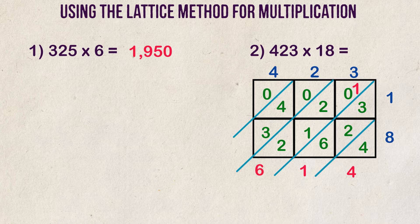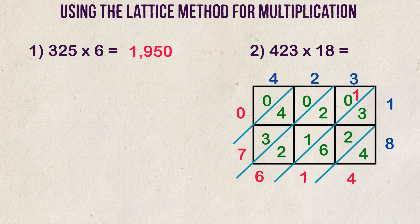Moving on, we have 3 plus 4 equals 7. And 0 is 0. We look at the numbers from left to right. We can ignore that 0 as our answer is 7,614.